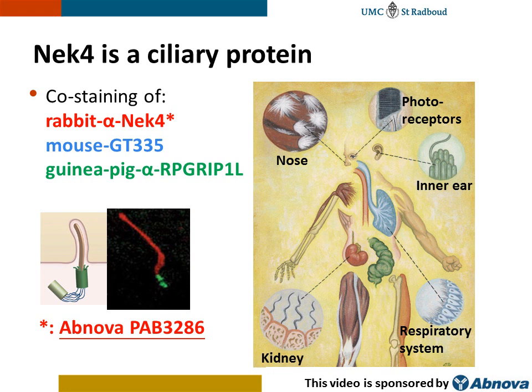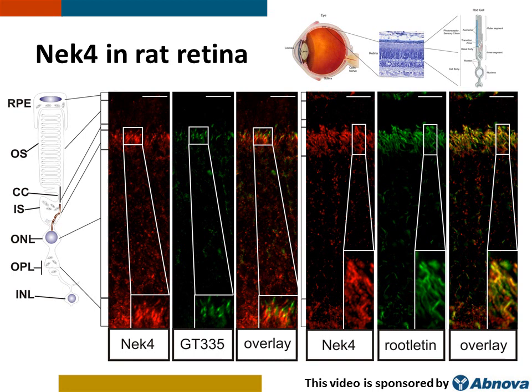Now we discovered that NEC4 localizes to cilia, we also wanted to assess its localization in several ciliated tissues. We therefore tested the NEC4 antibody from Abnova on sections of various tissues. First we looked at the retina, which is the light-sensitive layer at the back of the eye, where the photoreceptor cells are present. The outer parts of photoreceptors are specialized cilia. In these photoreceptors, we found NEC4 to localize to thread-like structures just below the connecting cilium. This pattern resembled that of rootletin, a structural component of the ciliary rootlet, which is depicted in the figure on the left in yellow. A co-staining with rootletin indeed showed that NEC4 co-localizes with rootletin.